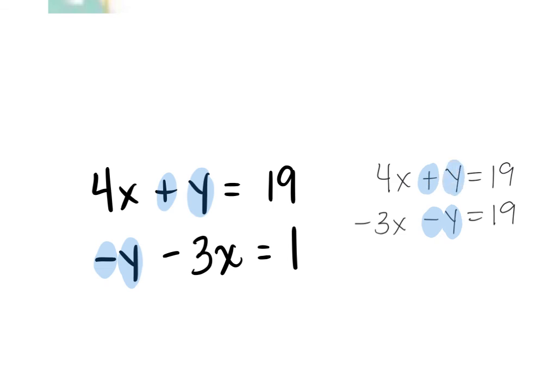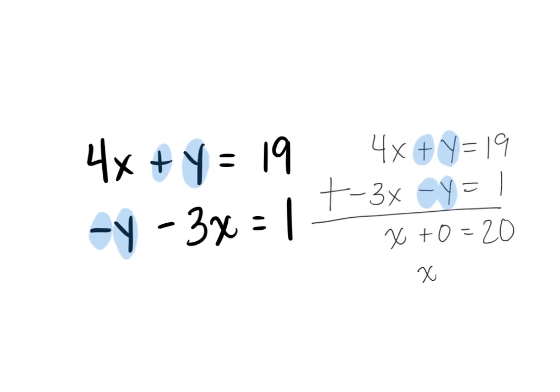Now we can add them together. When we add: 4x + (−3x) = x. The +y and −y cancel out, giving +0. Then 19 + 1 = 20. So we get x = 20.